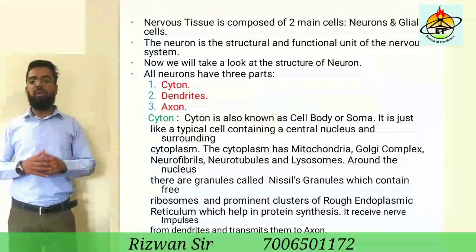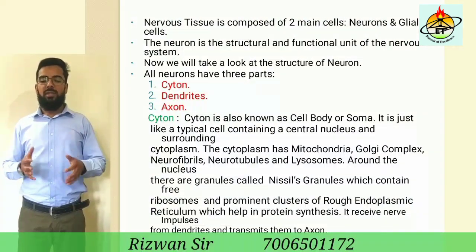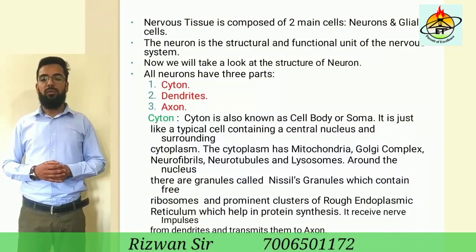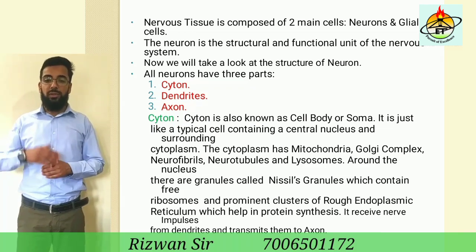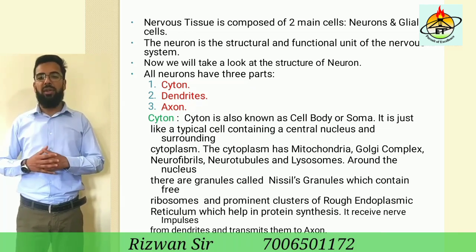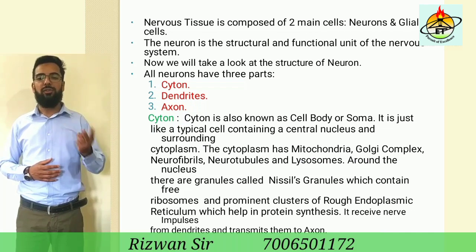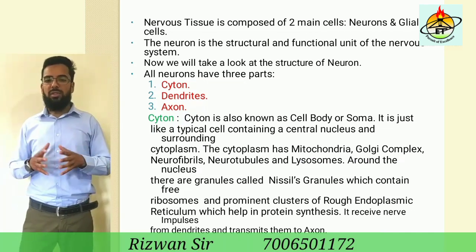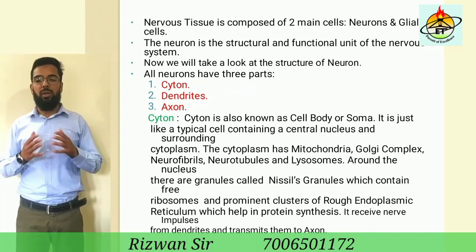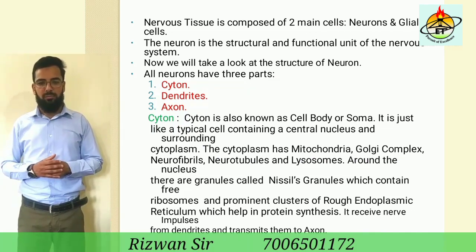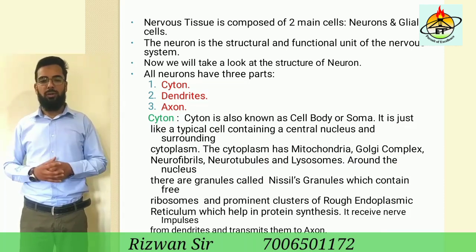Now, the composition of the nervous system. The nervous system is composed of nervous tissues. Nervous tissue is further composed of two main cells: neurons and glial cells. The neuron is the structural and functional unit of the nervous system. Now we will take a look at the structure of the neuron.